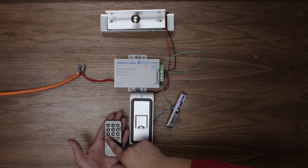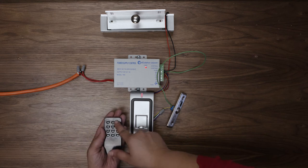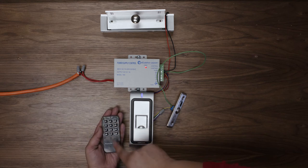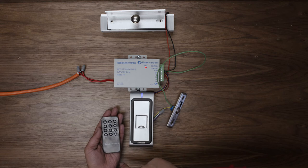On the remote control, press star and then one, two, three, four, five, six to enter programming mode. The light on the scanner will turn blue.